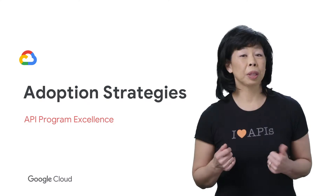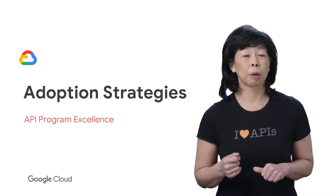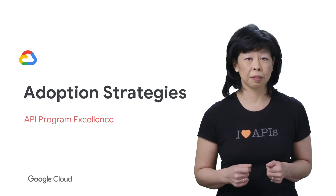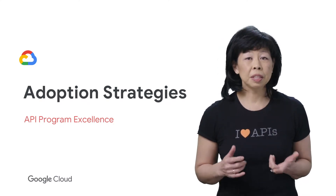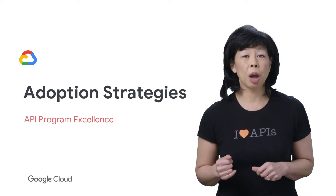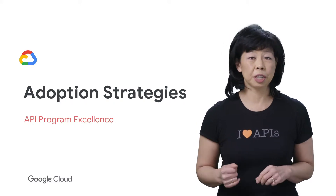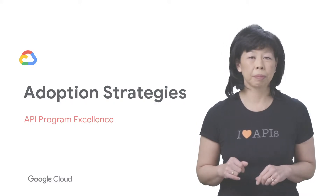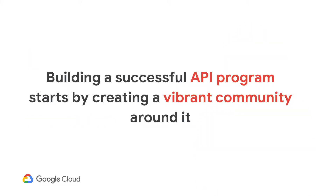Every organization would like their API program to be successful. In this video, we will talk about adoption strategies to engage developers. Having adoption strategies is about finding ways to grow your API program, and building a successful API program starts by creating a vibrant community around it.